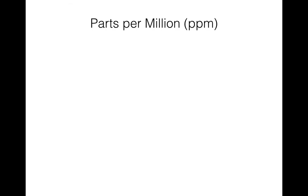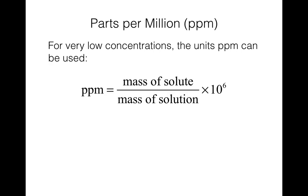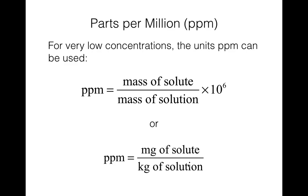The last type of concentration we'll talk about today is parts per million, or ppm. This is used when you have a really low concentration. You take the mass of the solute divided by the mass of the solution, then multiply by one million because it's such a small amount. Another way — often how problems are given — is to put the solute in units of milligrams and the solution in units of kilograms. Then you don't need to multiply by a million because it's factored into the units, and that gives you ppm directly.